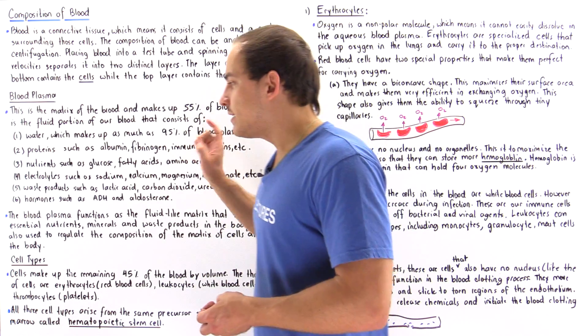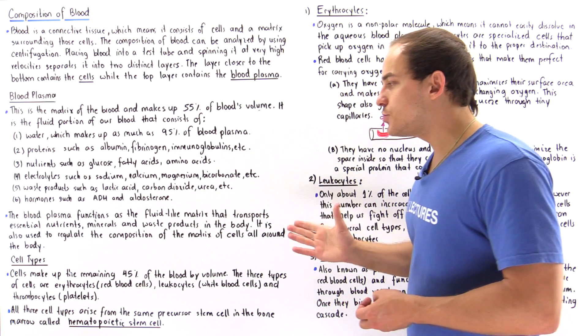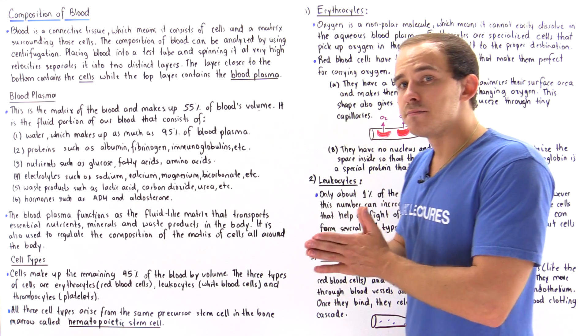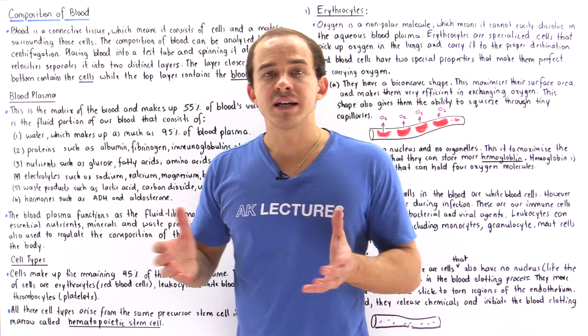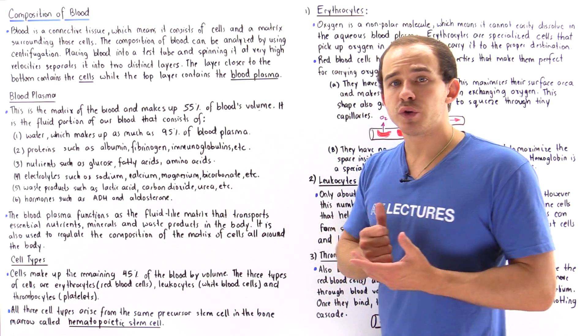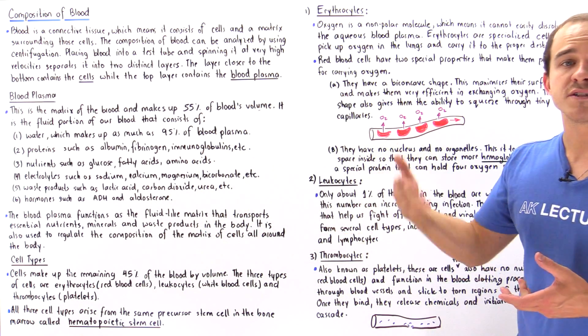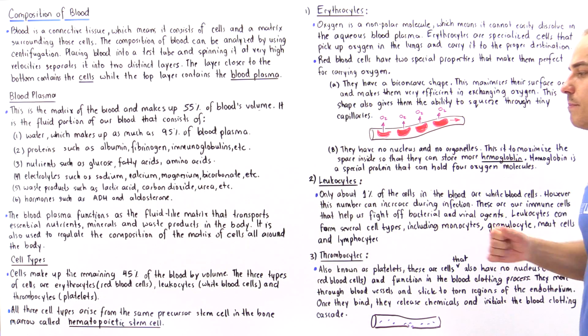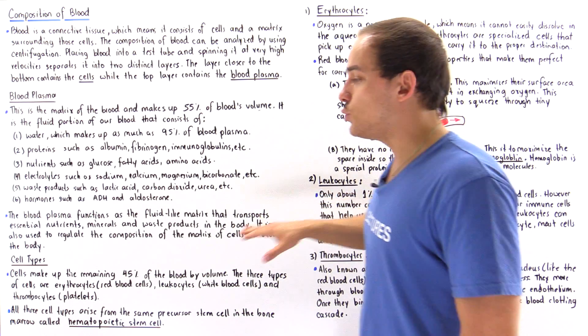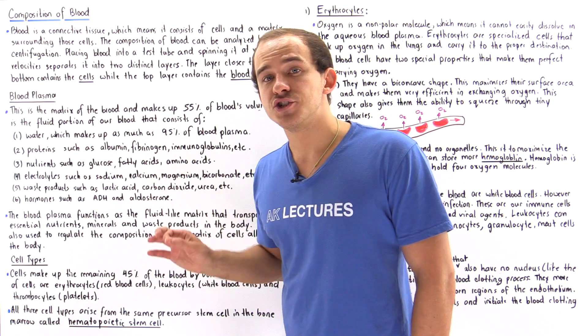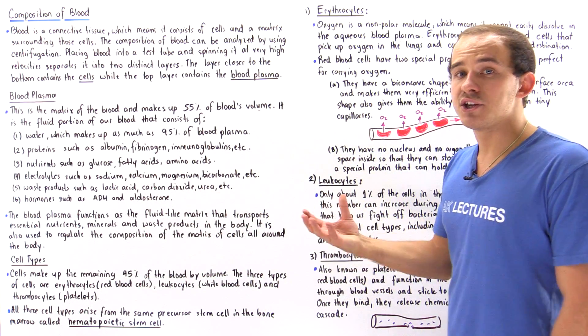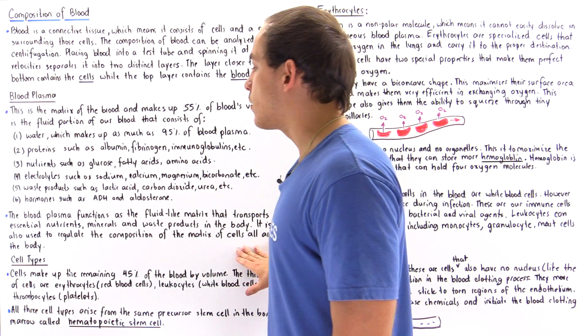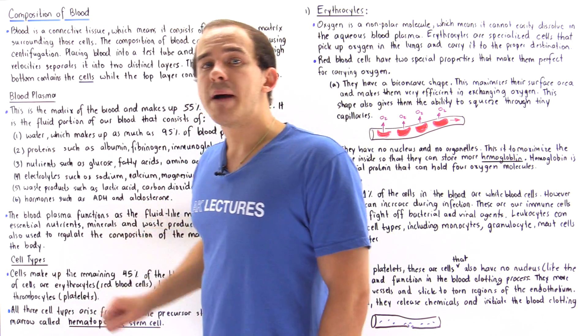Now we can conclude that the blood plasma functions as a fluid-like matrix that is responsible for moving, for transporting different types of substances, nutrients, waste products, minerals, vitamins, and so forth from one point in the body to a different point of the body. And they are also used to regulate the composition of the nutrients, molecules, and ions of the matrix of different cells found inside our body.